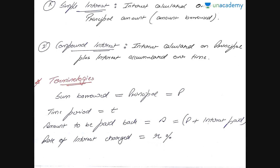With simple interest, interest is calculated only on the principal amount. For example, you take 100 rupees and return it five years later, and I charge you 10% every year on the principal of 100 rupees. A year later my money grows to 110, two years later 120, three years later 130, and eventually at the end of five years I ask for 150 rupees back. That is simple interest — interest is calculated only on the principal, which is the amount borrowed.